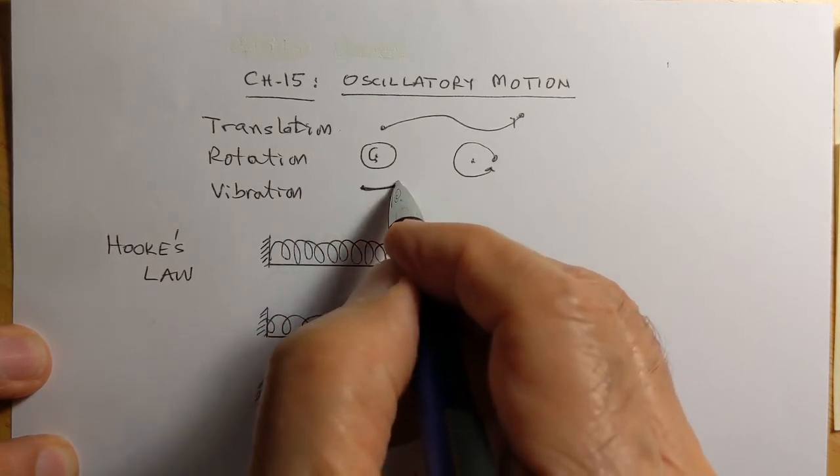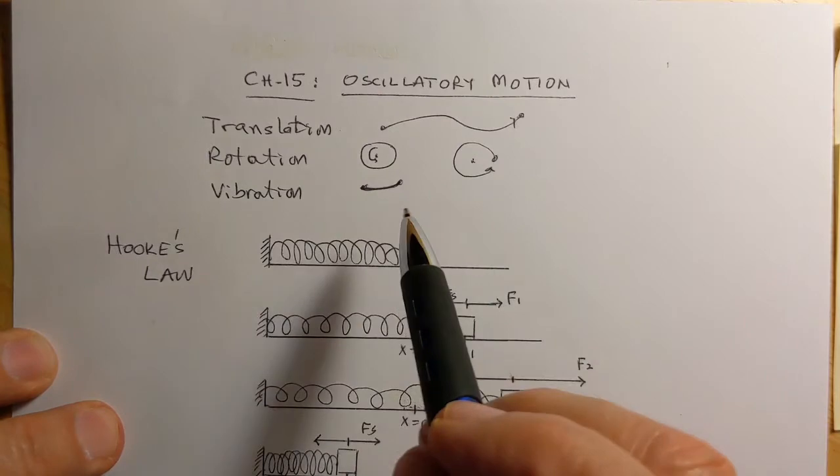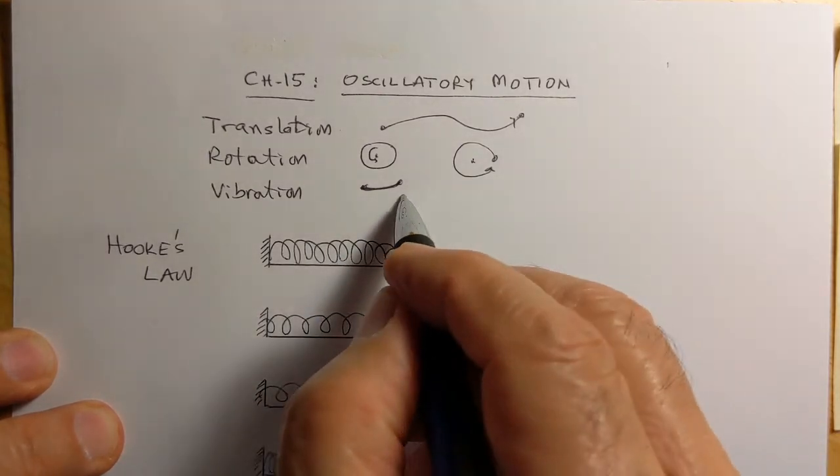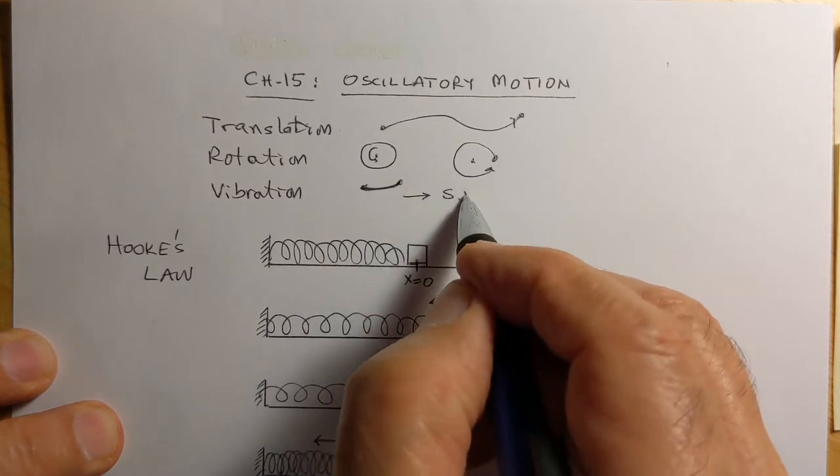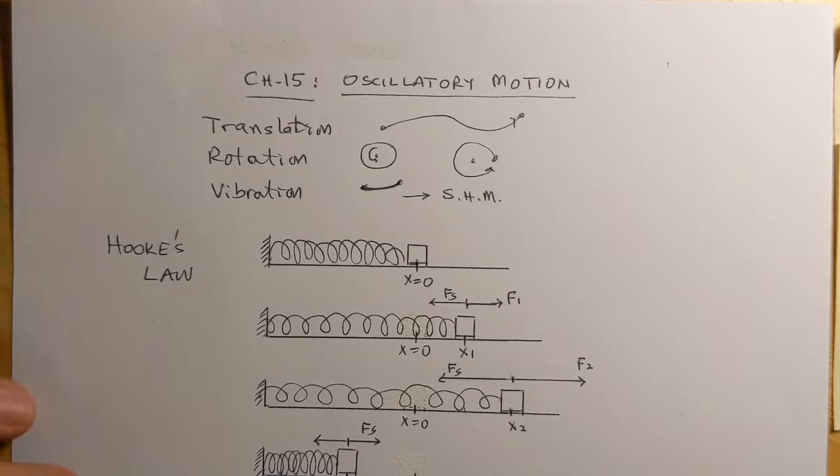The third kind is vibration in which an object goes back and forth. Could be a straight line, could be maybe not in a straight line, but it just keeps going back and forth. We look at vibration and a very special kind of vibratory motion which is called simple harmonic motion.